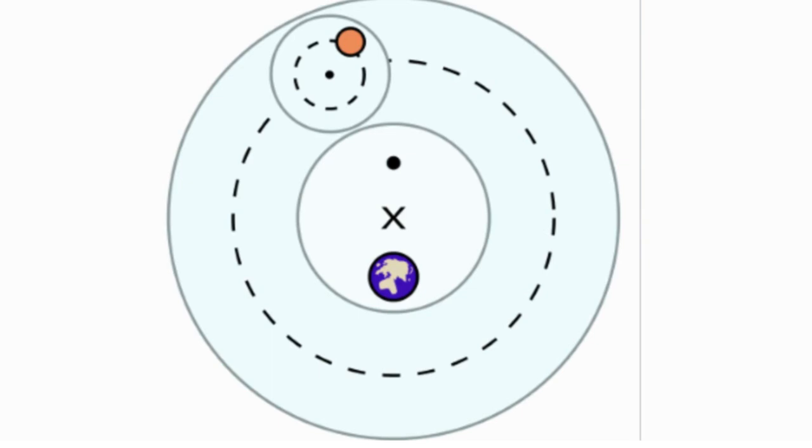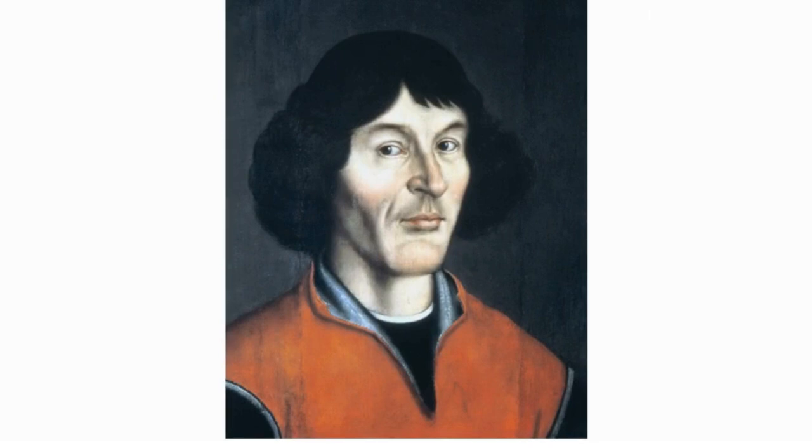This model of the earth being the center did not sit well with Copernicus and in 1543 he proposed On the Revolutions of the Celestial Spheres.